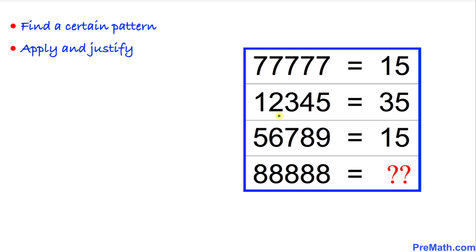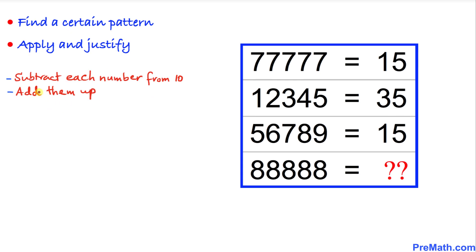Let's get started with the solution. The first thing we are going to do is look at this problem really carefully and come up with a certain pattern, then apply that pattern and justify it. Here is the rule we are going to apply: we are going to subtract each number from 10 and then add them up.